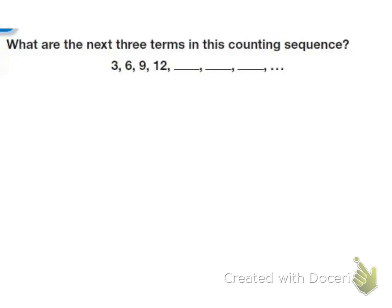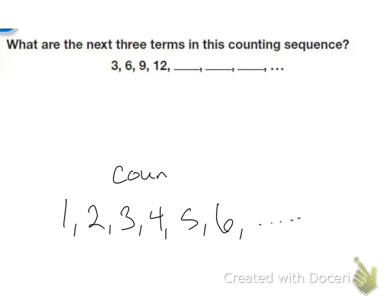When we're working with numbers, we first start off by learning how to count. The numbers we count are one, two, three, four, five, six, etc. And these are called counting numbers.